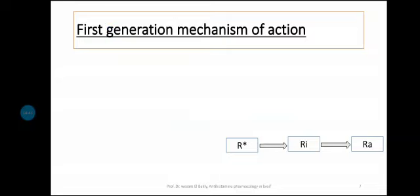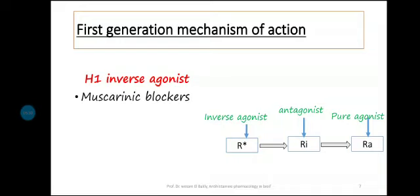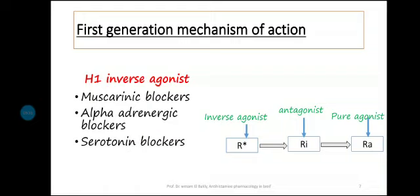The mechanism of action of first generation antihistamines: Number one, antihistaminic effect by inverse agonist action on H1 receptors. An inverse agonist converts a constitutively active receptor into an inactive state, unlike a pure agonist which activates or an antagonist which has no efficacy. H1 antihistamines act as inverse agonists on H1 receptors, plus they have muscarinic blocking, alpha-blocking, and serotonin-blocking effects.